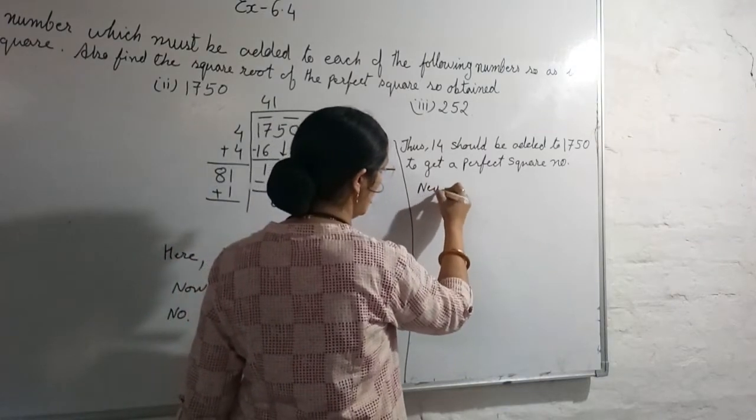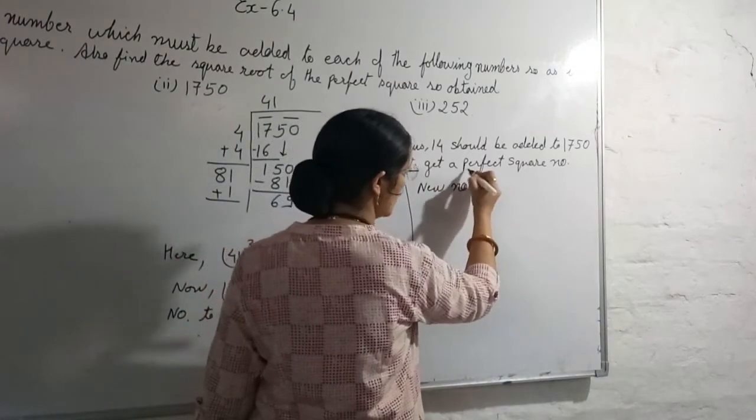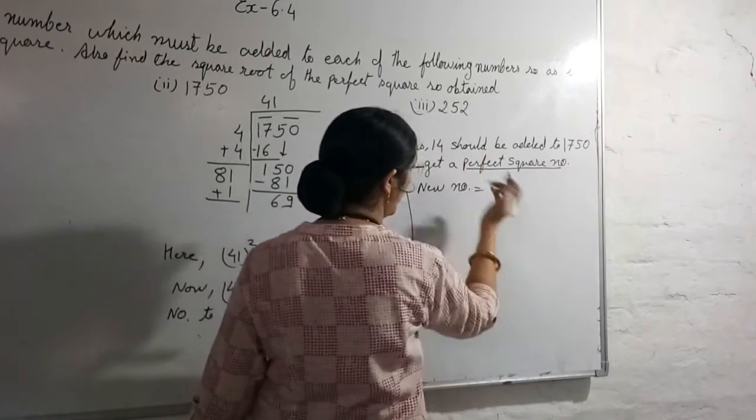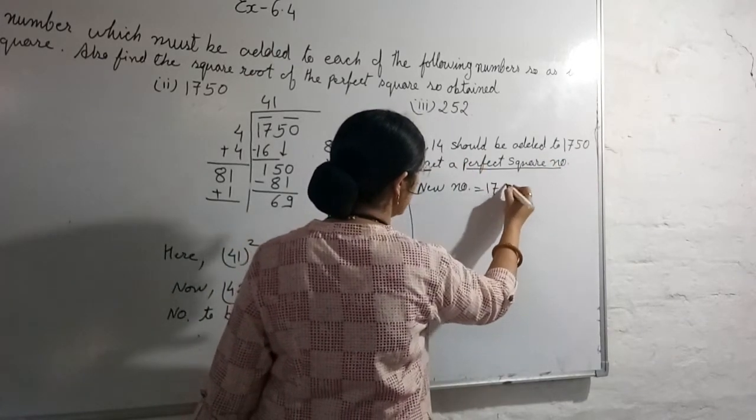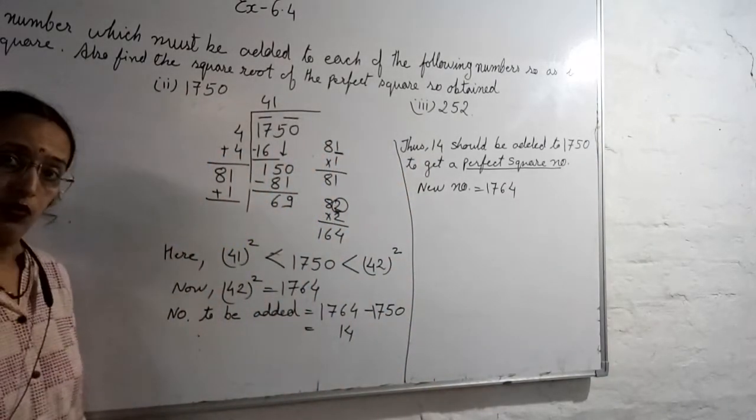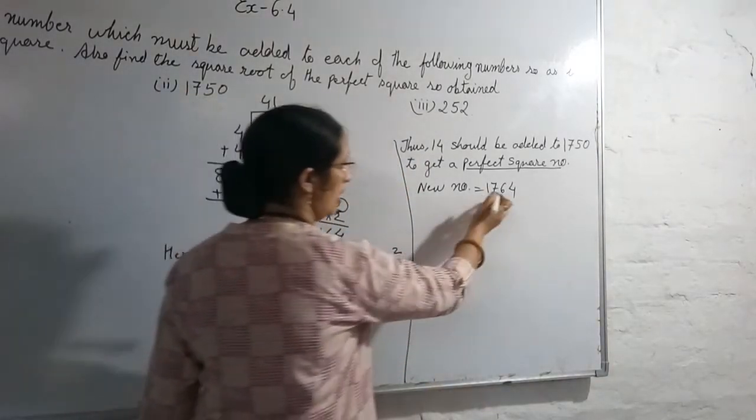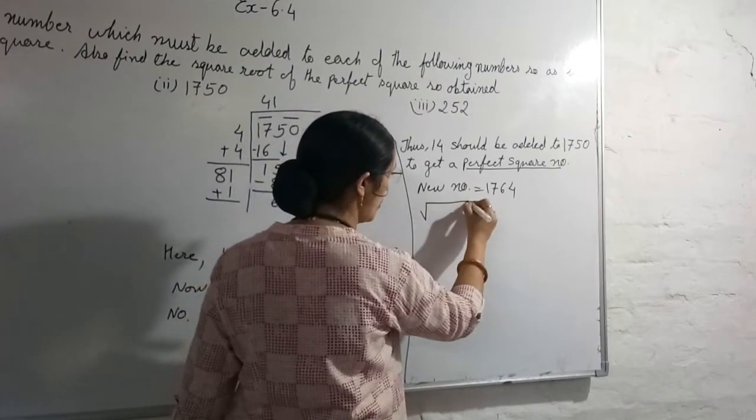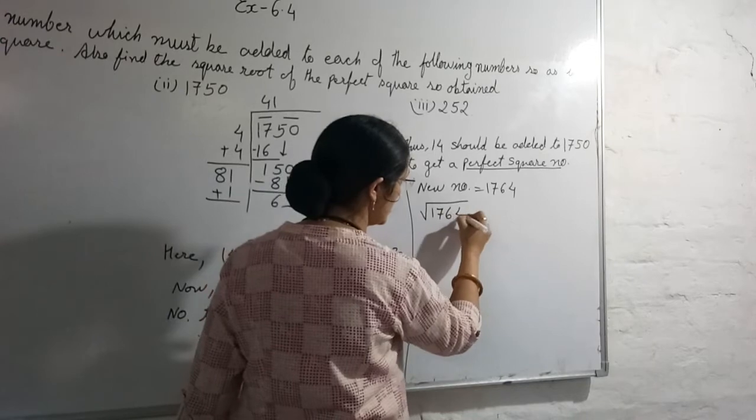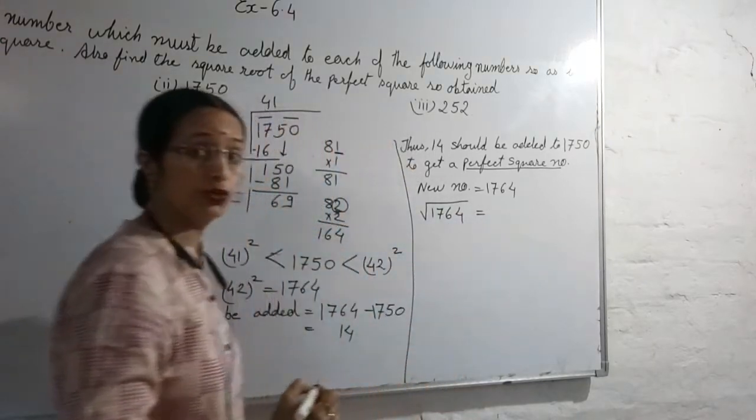New number means perfect square number. How much will it be? This will be your new number, perfect square number. Now this perfect square number, we will know square root of 1764 is equal to...